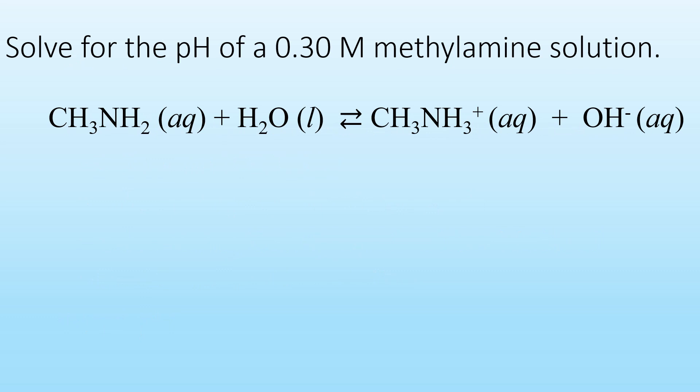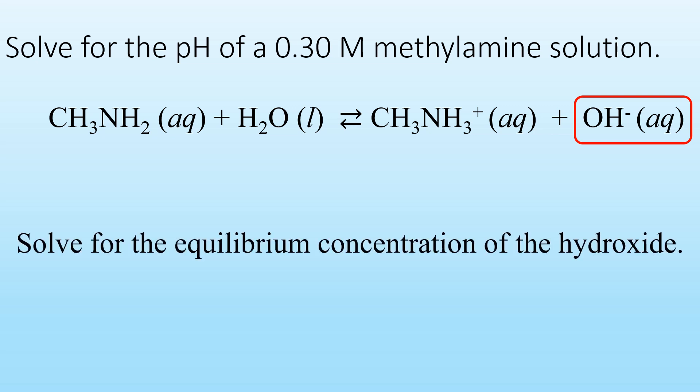Let's solve for the pH of a 0.30 molar methylamine solution. Here you'll see the balanced equation for the reaction of methylamine acting as a Bronsted-Lowry base and water acting as the Bronsted-Lowry acid. Notice that hydroxide is produced as part of this reaction, and we'll have to solve for the equilibrium concentration of the hydroxide, then find the pH. So let's set up an ICE table.